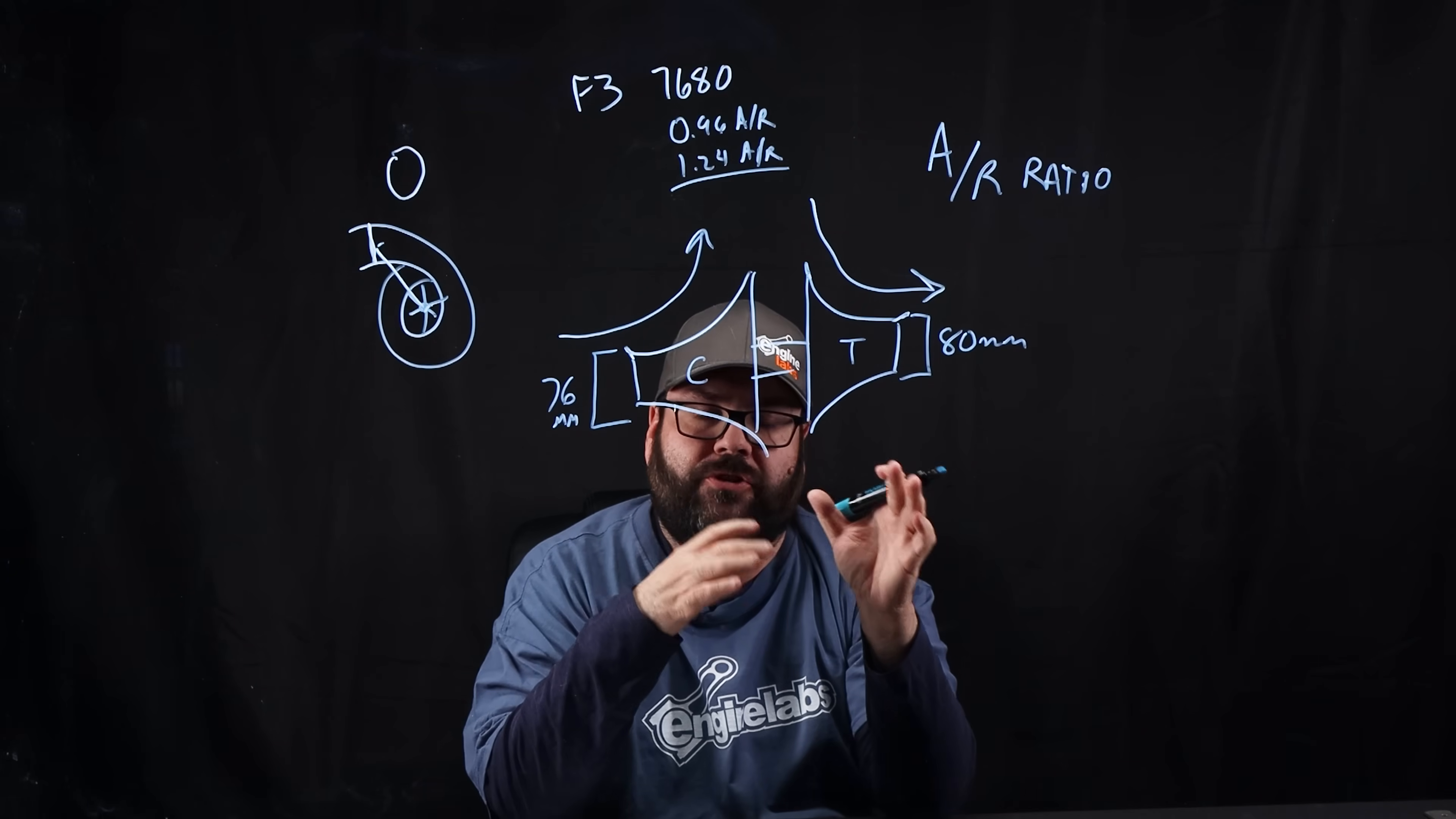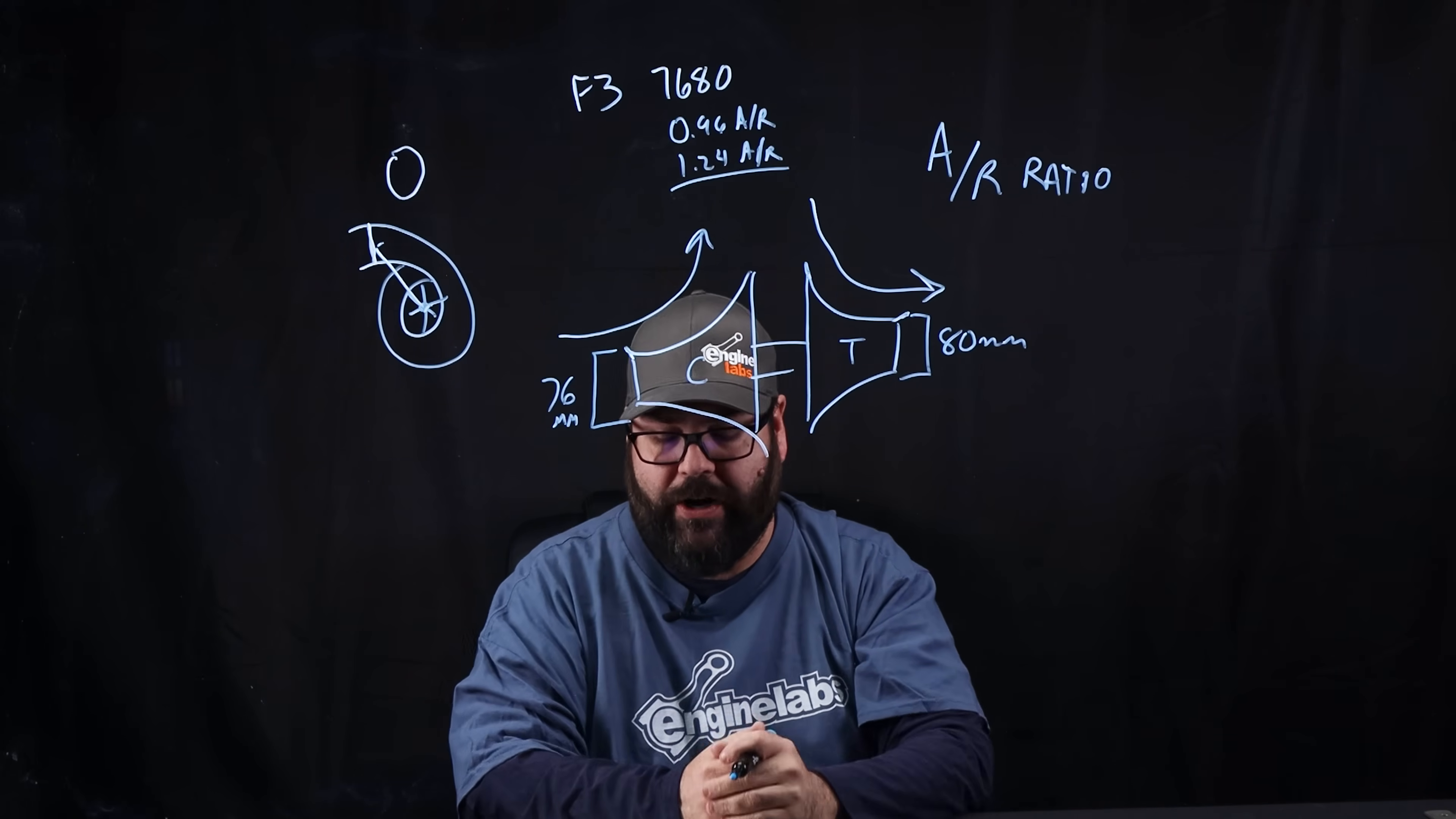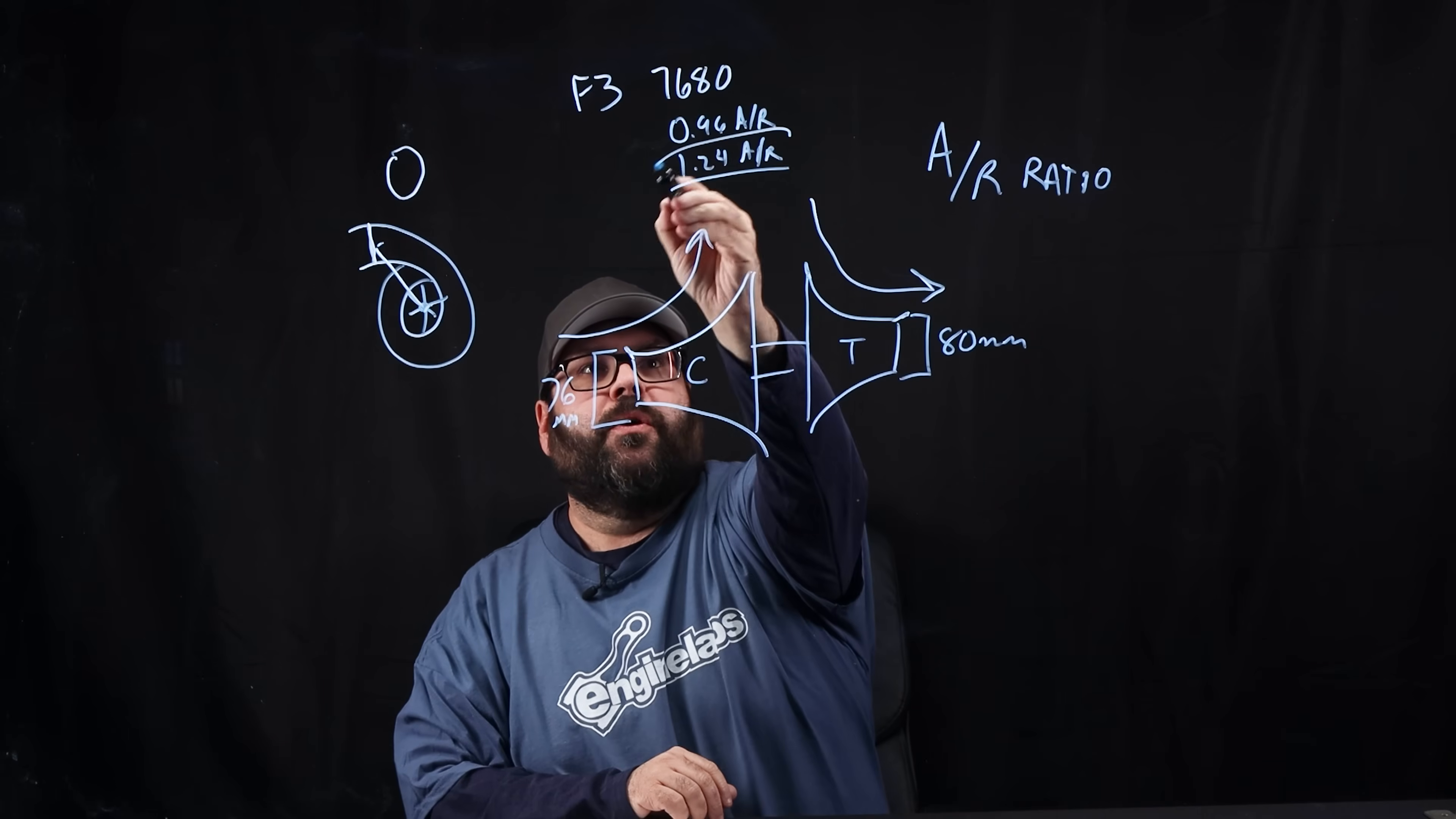Typically, on a drag car, you would see a higher AR ratio because you want more peak power. But on something like a road race car or something where you want a lot of response on the street, you would have a lower AR so that it spools up quicker and behaves more like an NA car. There was also a 1.28 divided housing, but that's something we could talk about in a whole series of articles. Needless to say, no one used it. So they both used the 1.24 AR.